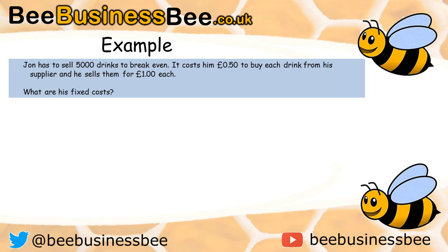Let's look at an example of how this can be done. John has to sell 5,000 drinks to breakeven. It costs him 50p to buy each drink from his supplier and he sells them for £1 each. What would be his fixed costs? What we need to do now is firstly write out our breakeven formula and then complete it with the information that we've got.